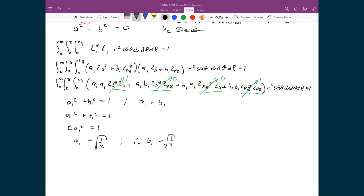What this also tells us is that A2, since it's the same value as A1, also is 1 over the square root of 2. And since B2 is the negative of B1, then that means we've got the negative square root of 1 half.